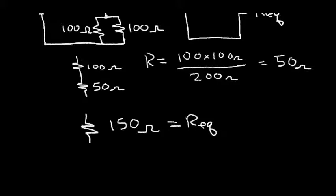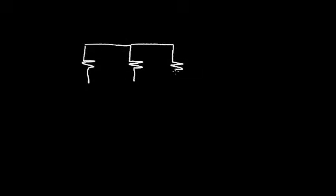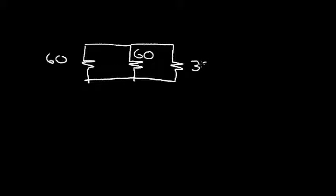Let's do another sample problem. Let's say we have three resistors in parallel. To make the math simple, let's say this is 60 ohms, this is 60 ohms, and this is 30 ohms. Before, we came up with an equation for the equivalent parallel resistor when we had two resistors, but now we have three resistors. So let's replace the two 60 ohm resistors with an equivalent parallel resistor. We know that the parallel resistor is a product over the sum.